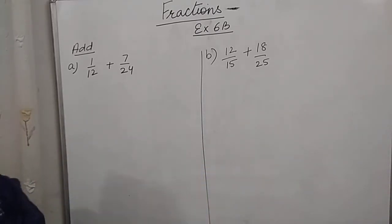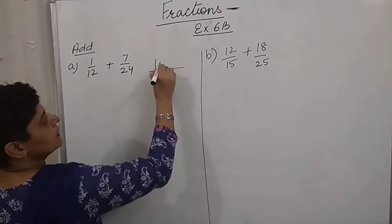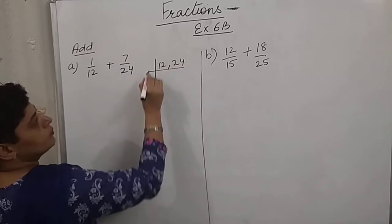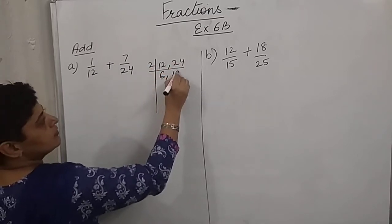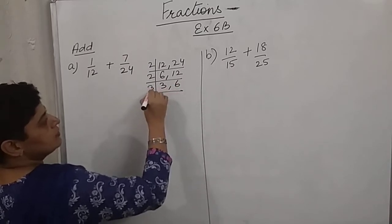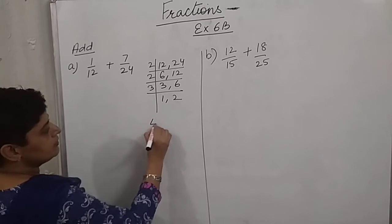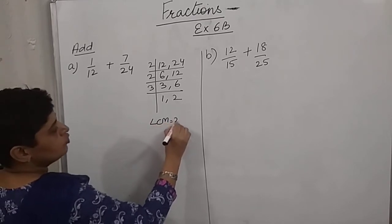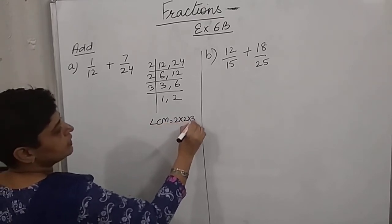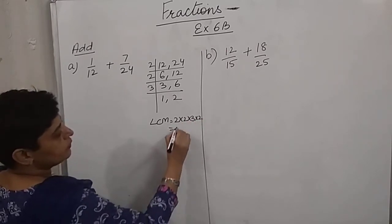So our first step will be to make the denominators same and we will be finding the LCM. Now 12 and 24: 2 into 6, 2 into 12, 2 into 3, 2 into 6, 3 into 1. So LCM is 2 into 2 into 3 into 2. So 4 into 6 is 24.